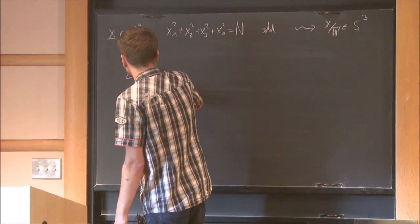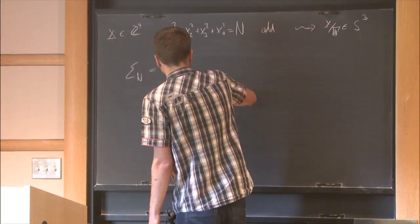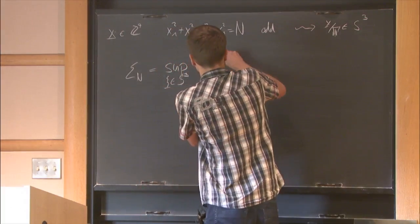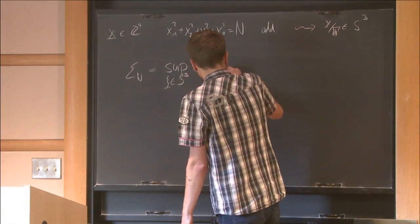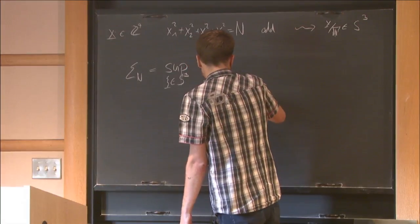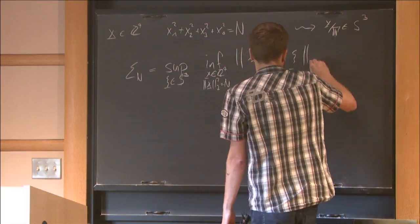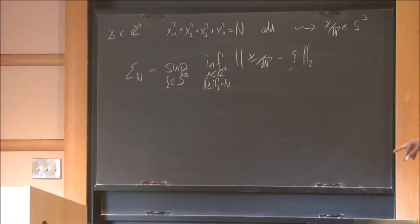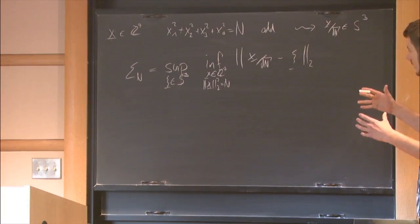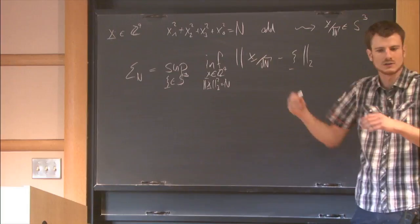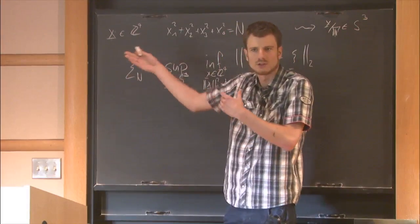We can define the quantity epsilon_n as the supremum over points xi in S3 of the infimum of distances from those lattice points to xi. This quantity is like the smallest epsilon such that if you center a ball of radius epsilon around all of these points, you cover the whole sphere. Volume arguments give you a lower bound on epsilon.